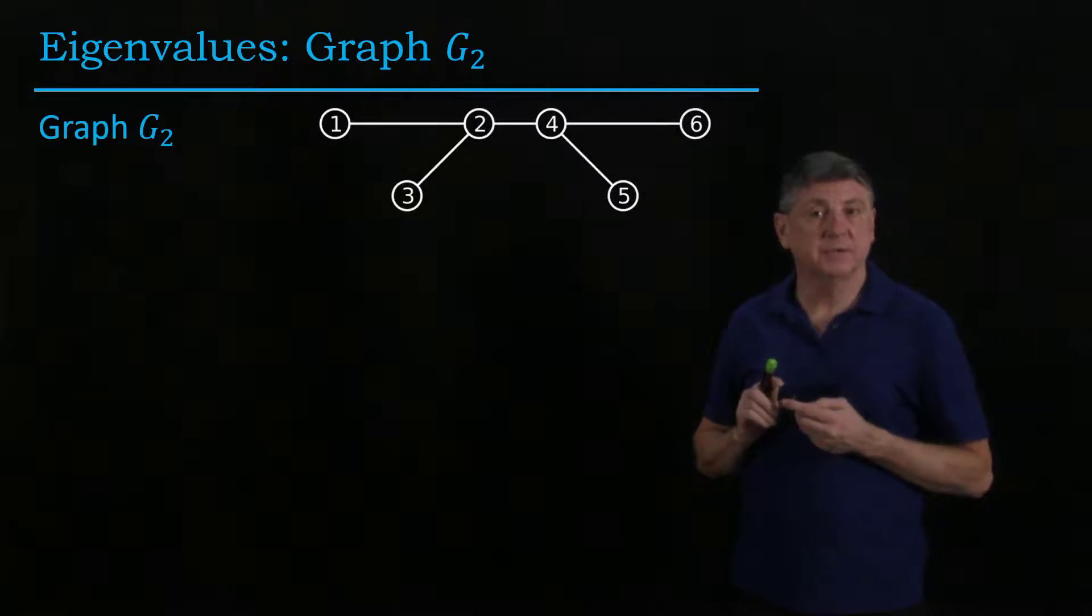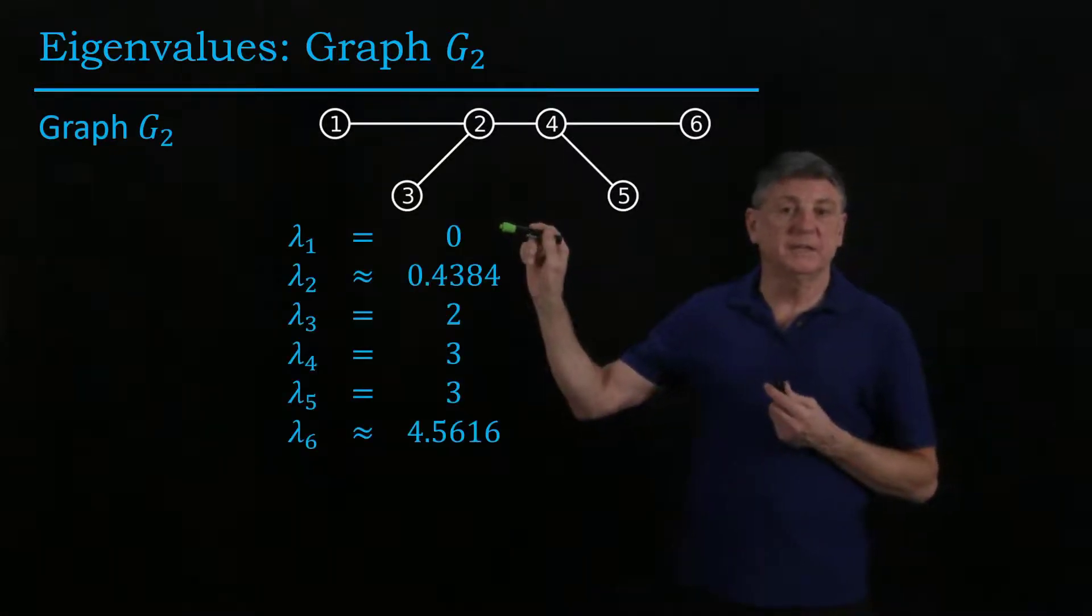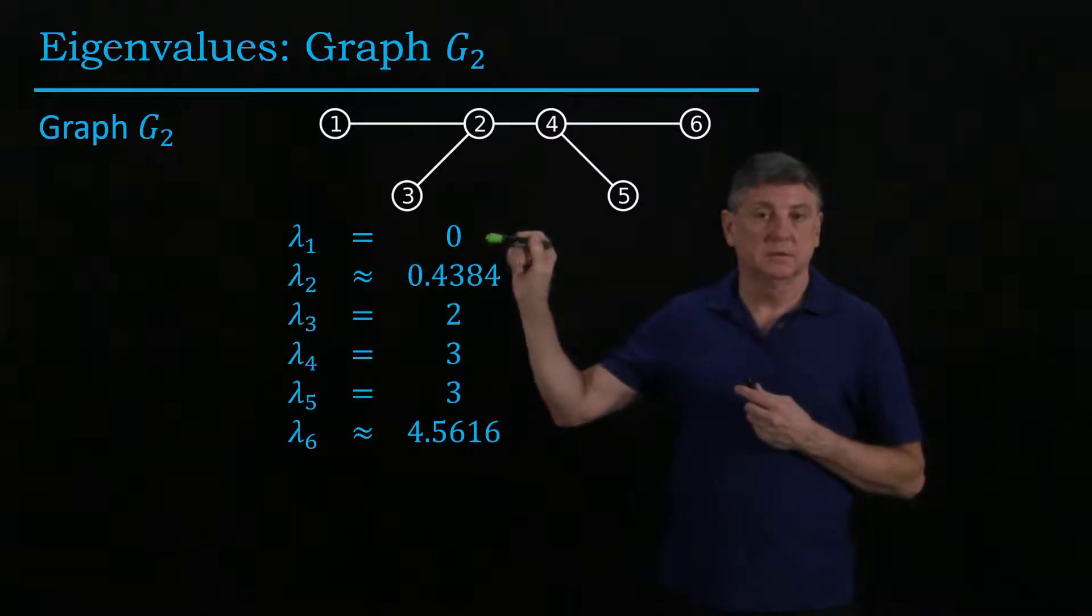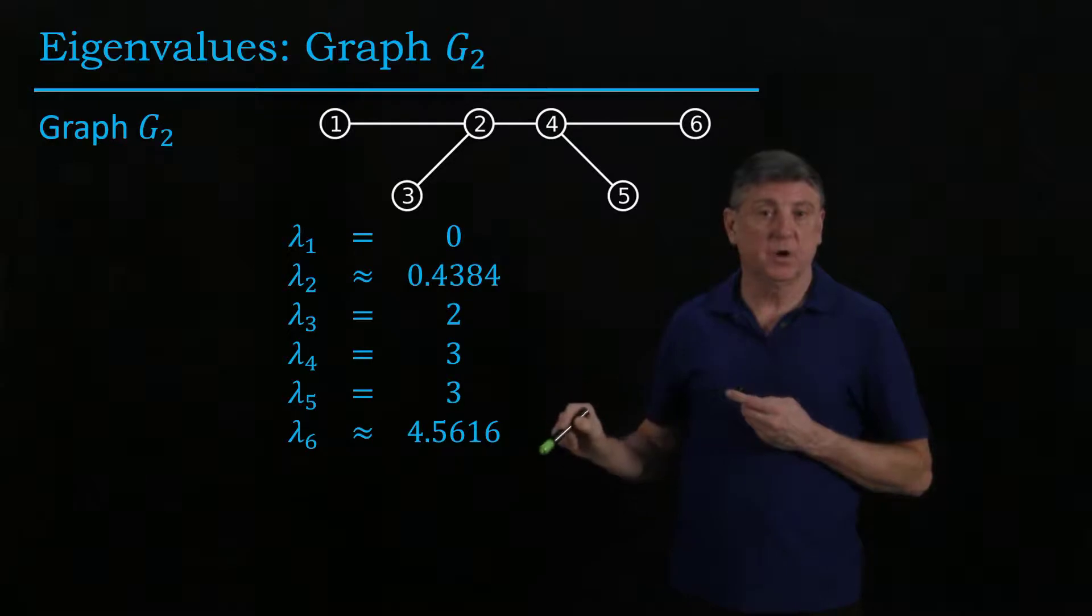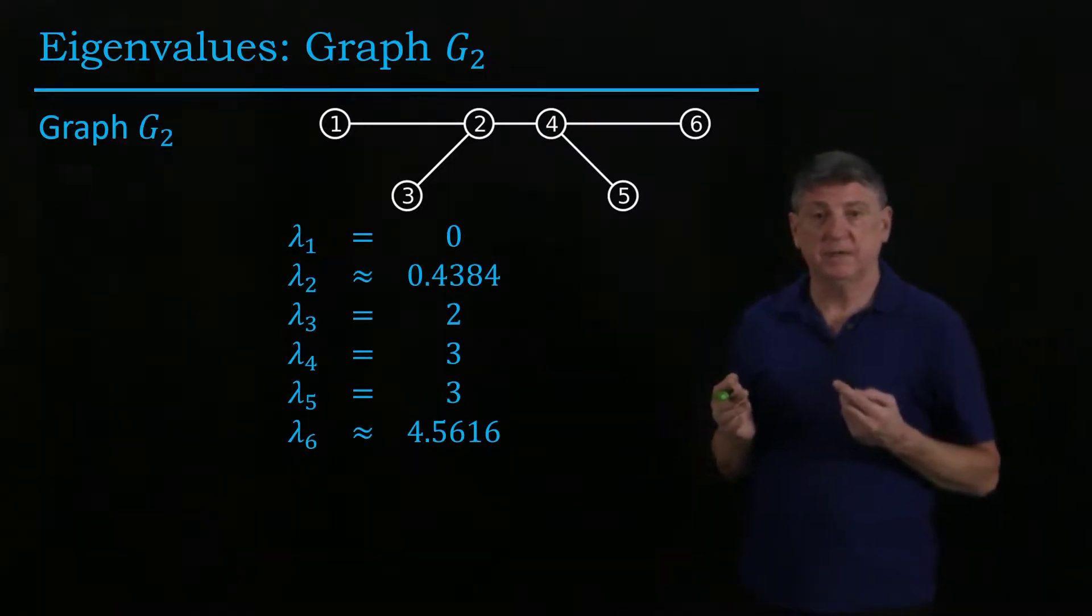So let's take a look at graph two. For graph two we know there is always one eigenvalue that's zero, and now the rest of them are non-zero, and now we're starting to see some non-integer eigenvalues coming in.